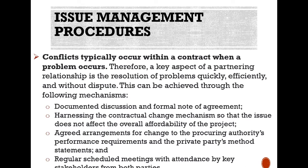Issue management procedures. Conflicts typically occur within a contract when a problem occurs. Therefore, a key aspect of a partnering relationship is the resolution of problems quickly, efficiently and without disputes. Conflicts can be resolved through the following mechanisms: documented discussion and formal notes of agreements; invoking the contractual change mechanism so that the issue does not affect the overall affordability of the project; agreed arrangements for change to the procuring authority's performance requirements and the private party's method statements; and regular scheduled meetings with attendance by key stakeholders from both parties.